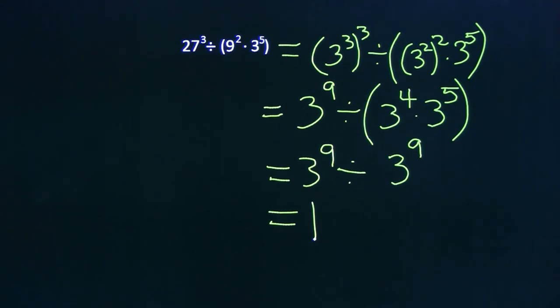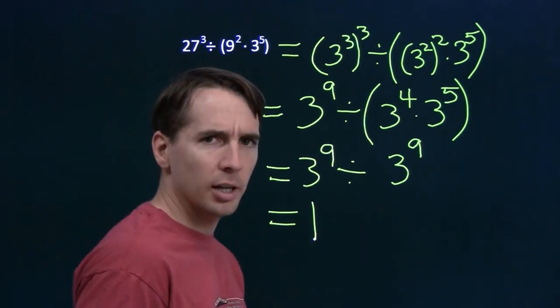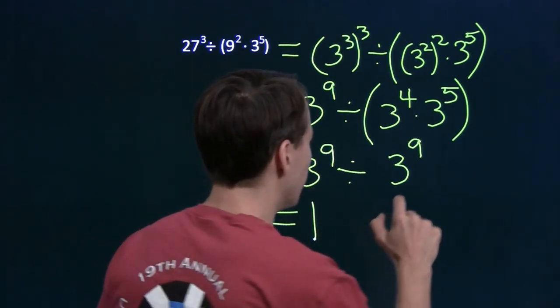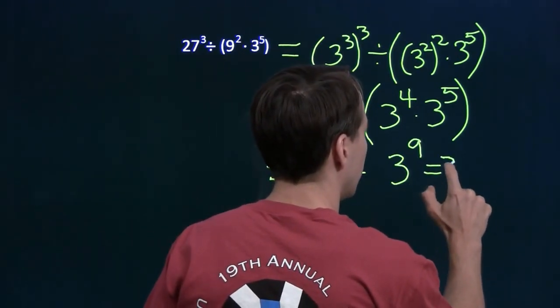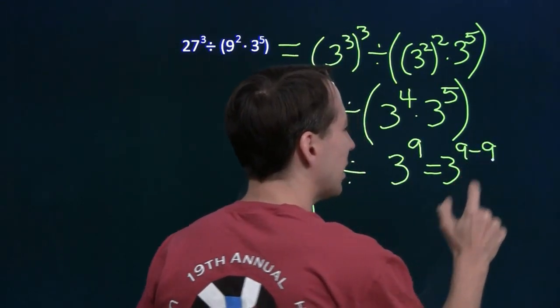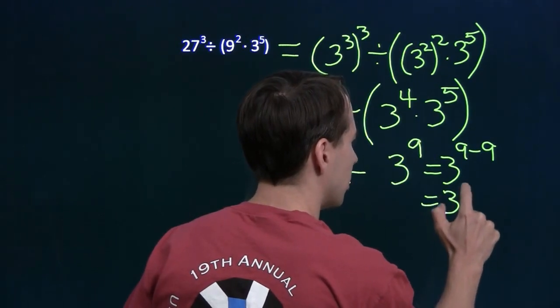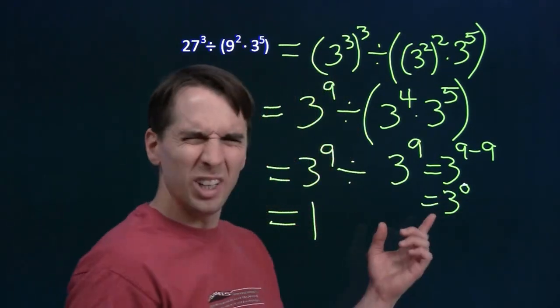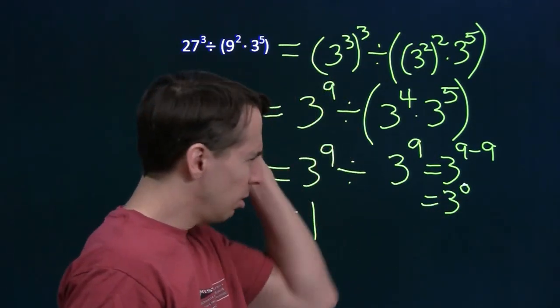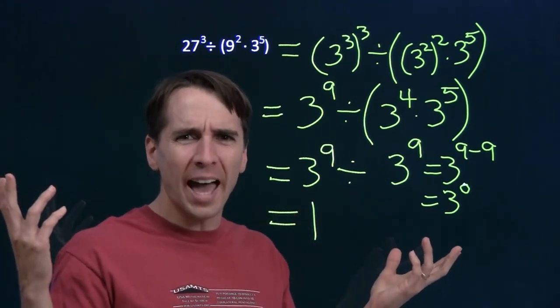Hey, wait a minute. This is a little fishy here. 3 to the 9th divided by 3 to the 9th. We have a rule for that, too. Same base, so I can just subtract the exponents. And when I subtract the exponents, you get 3 to the 0. That's just weird. I mean, this should come out to be 1. What's up with that?